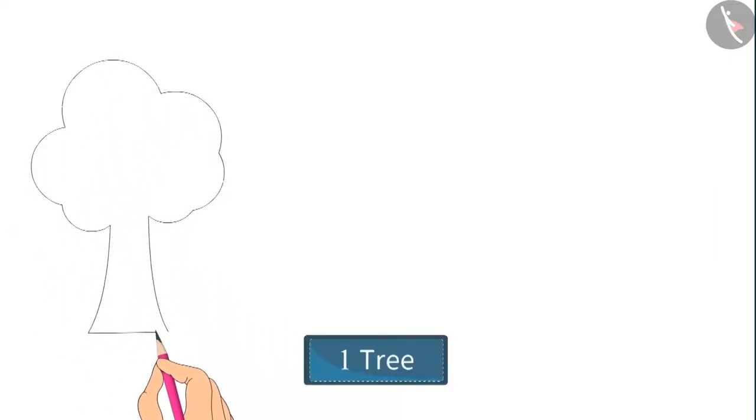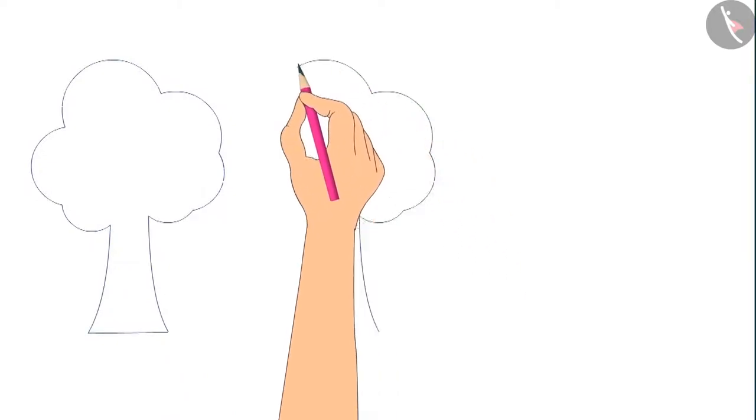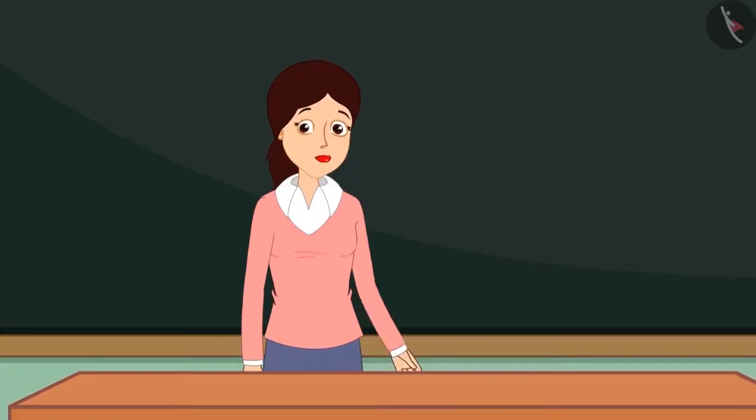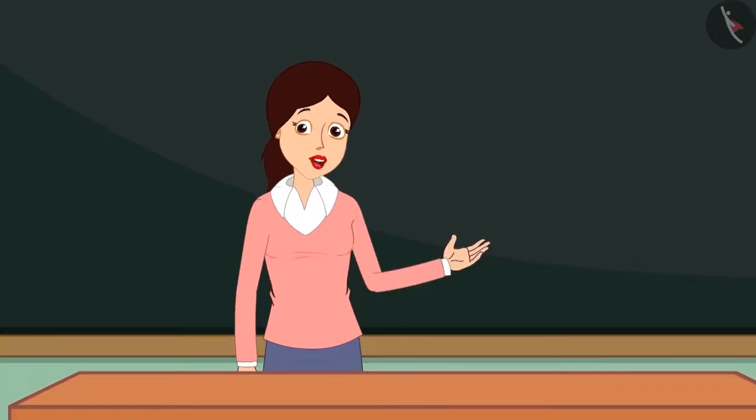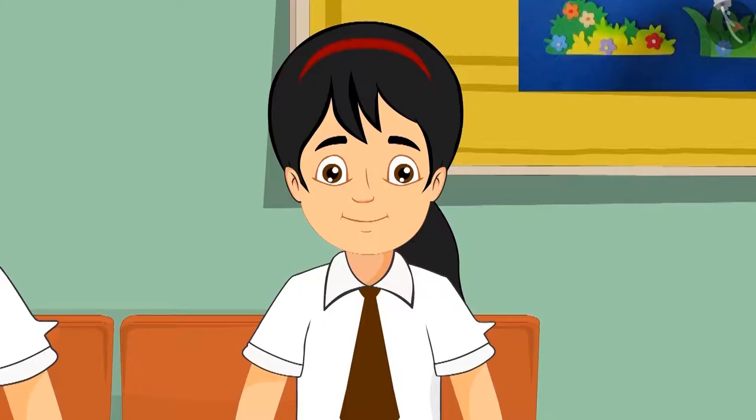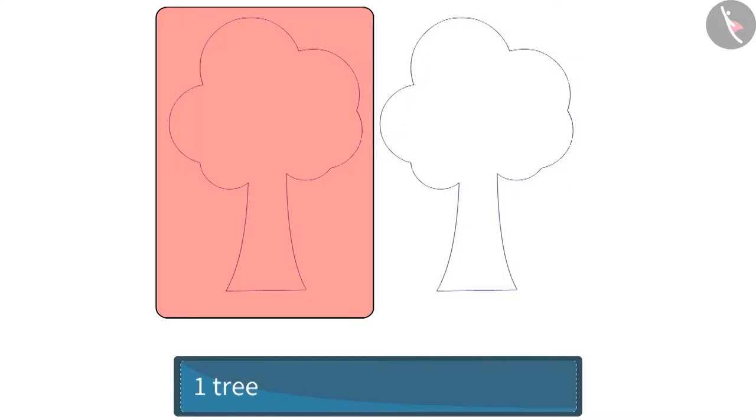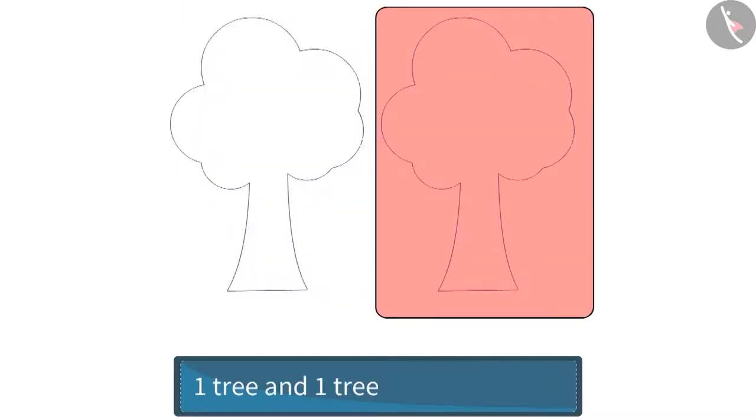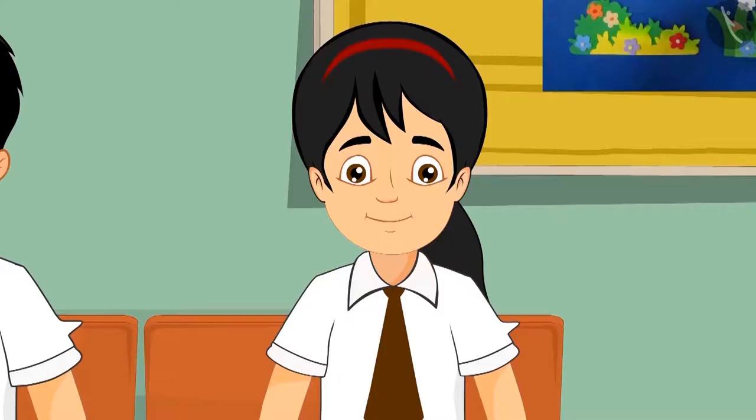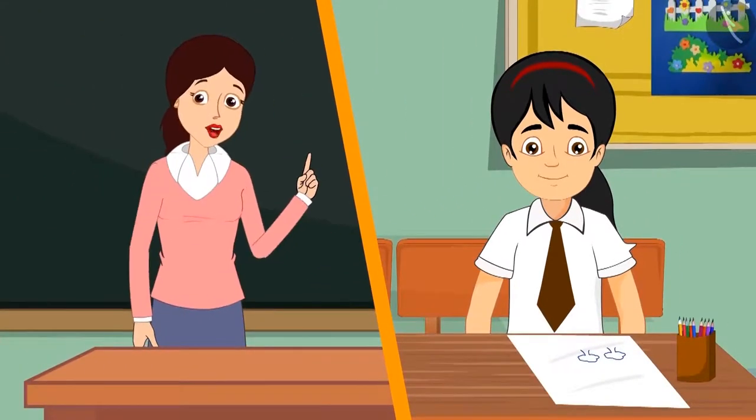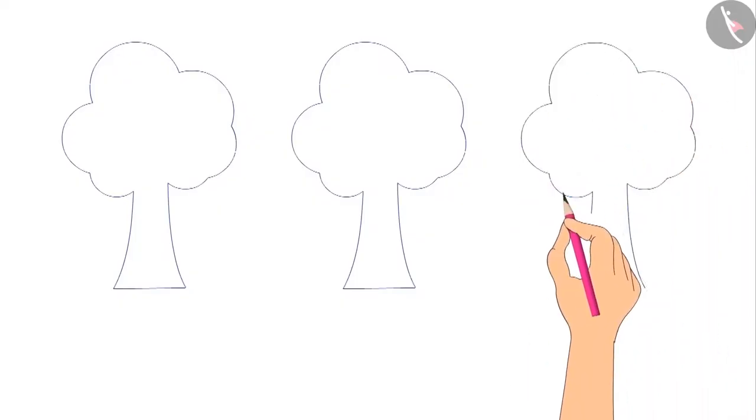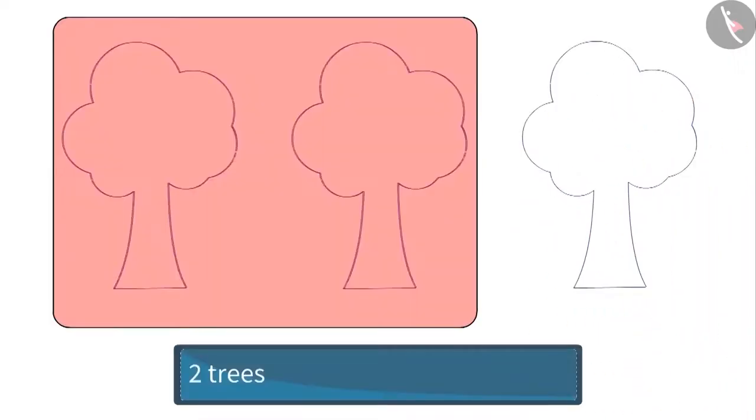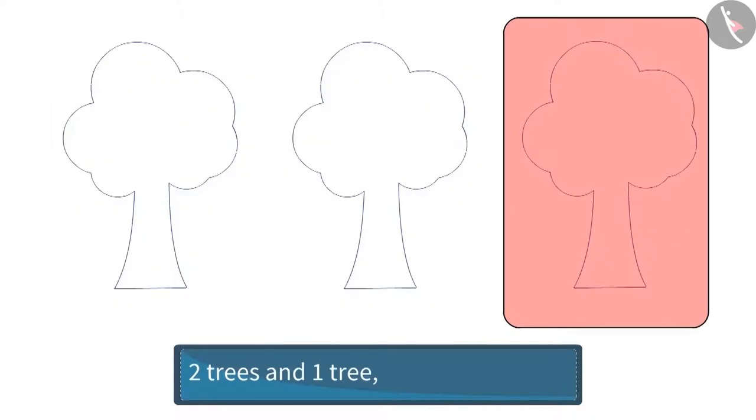At first she drew one tree. Because she had to make a dense forest, she drew another tree. 'Pinky, what have you drawn in the picture?' 'At first I drew one tree, then I drew another tree, so in total I drew two trees.' 'If you draw another tree, then how many trees will be there?' 'See this teacher, two trees and one more tree.'